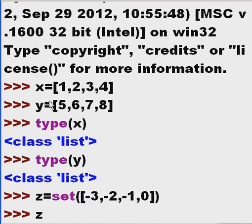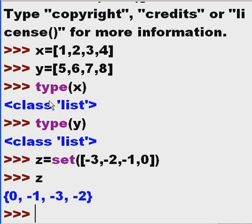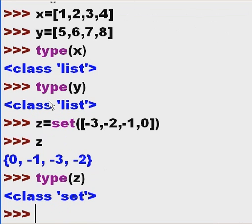And we've got ourselves a set. z, and it shows up looking like a dictionary, but it's not. What type of data structure is z? It is of class set. Wow.